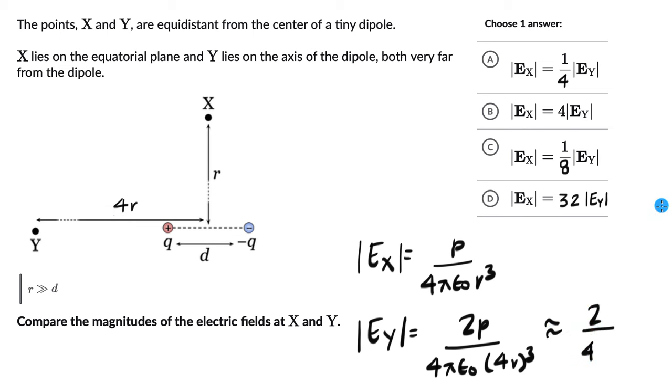This is the only extra factor. Everything else is the same: P divided by 4πε₀r³ appears in both formulas, and in EY it's being multiplied by this factor of 1/32.